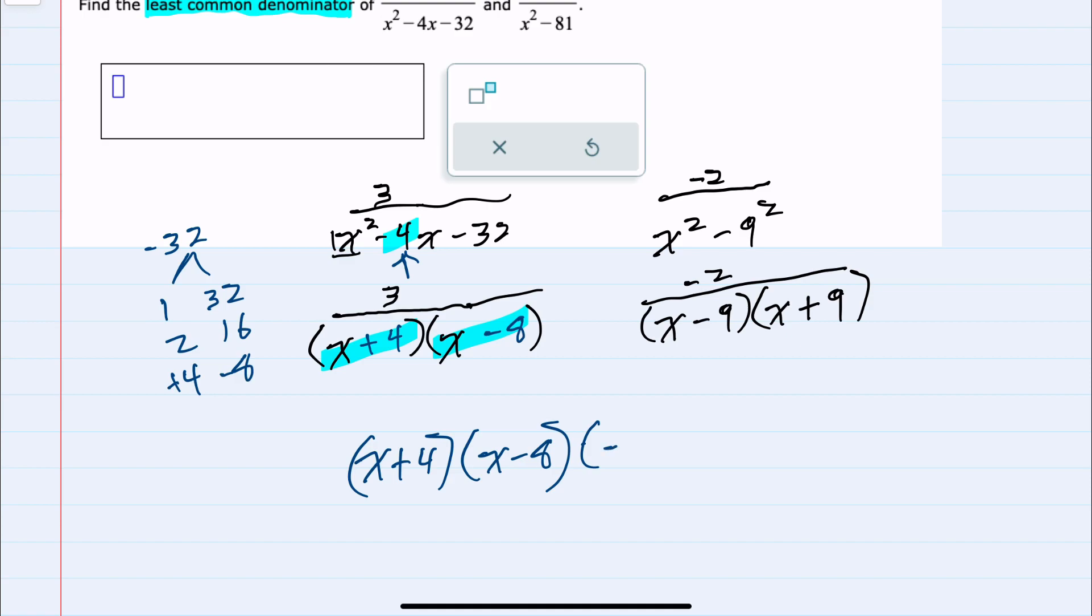But then it also has to have an (x - 9) and an (x + 9). Since there was no overlap in factors between the one on the left and the one on the right, our lowest common denominator had to have all of those factors in this LCD.